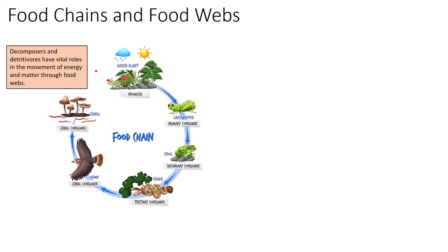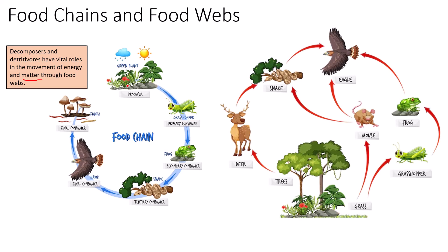Decomposers and detritivores have a vital role in the movement of energy and matter through food webs. Energy flows in one direction — from the Sun through producers and consumers to the final consumer. However, decomposers have a vital role in the recycling of matter. The nutrients produced at the producer level are recycled back to the earth and then recycled by the next round of producers and consumers. Energy flows; nutrients cycle.